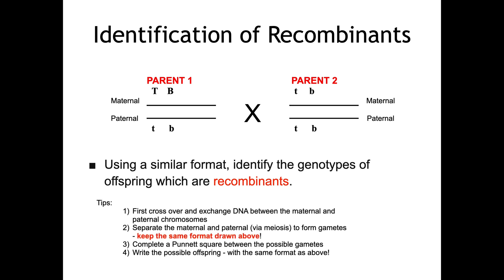First of all, you will need to cross over, form that chiasma and exchange DNA between the maternal and the paternal chromosomes. Then you're going to go through meiosis as previously demonstrated to form gametes.